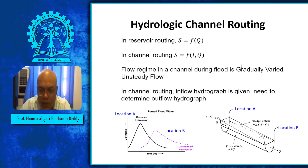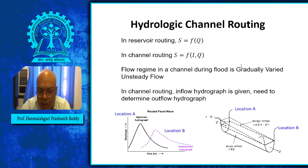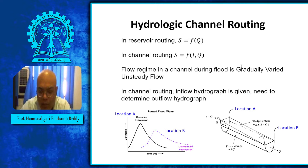You will learn about uniform flow, gradually varied flow, rapidly varied flow, steady flow, and unsteady flow in your fluid mechanics course next semester. Uniform flow means the velocity is constant along the channel length, which is only possible when the channel is prismatic. Once velocity and cross-sectional area are the same throughout, depth must also be constant — so if flow depth y is constant along the channel, dy/dx equals zero.